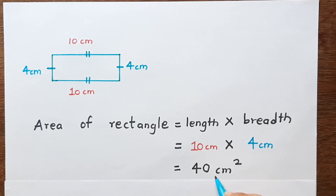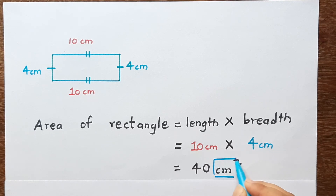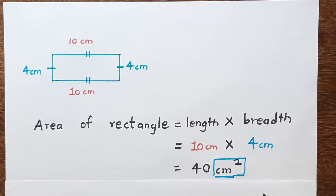Eek lokshan dhoora, unit asat, perimeter asat centimeter ata, area asat centimeter square ata. Don't forget to write centimeter square. The unit of area is centimeter square.